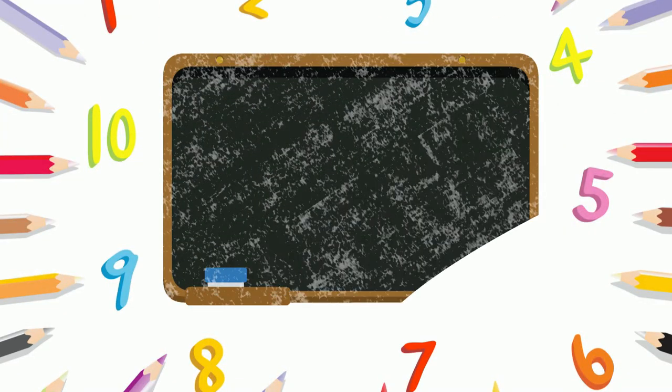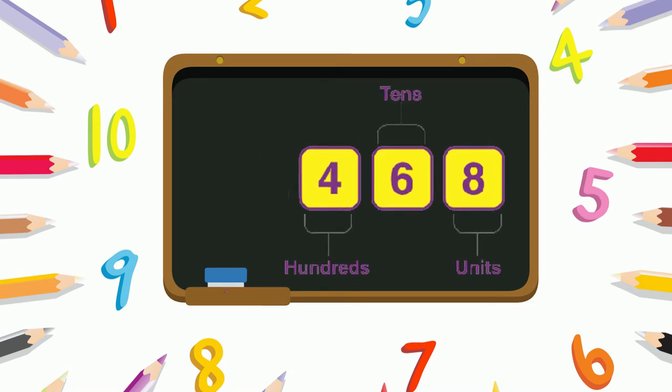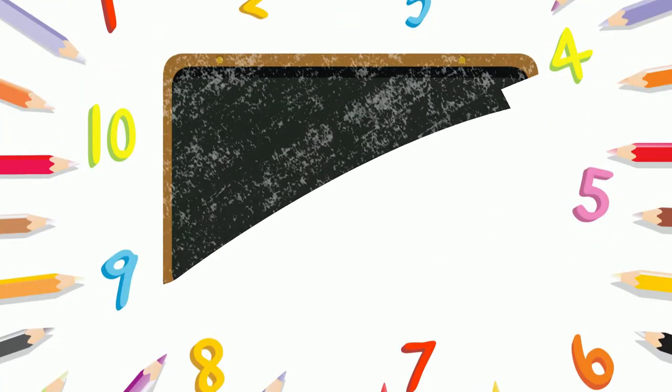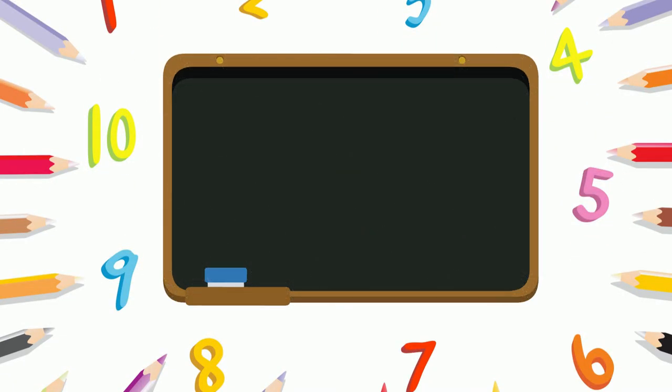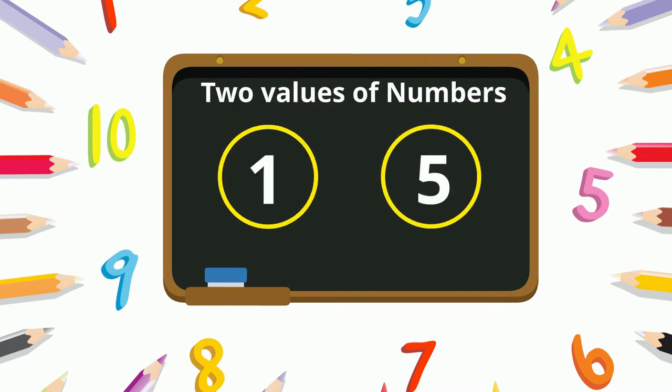Now that you know what digits are, let's find out what their value means. The value of a digit in a given number depends on its position in that number. Today we will learn about two values of numbers called units and tens.